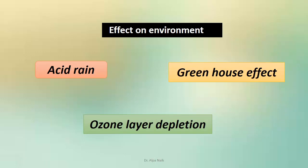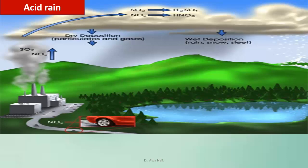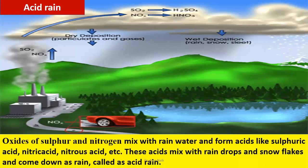There is a great effect on the environment through acid rain, greenhouse effect and ozone layer depletion. Acid rain is rainwater containing harmful amounts of nitric acid and sulfuric acid. When fossil fuels are burned, nitrogen oxides and sulfur dioxide are released. These oxides mix with rain water or water vapor and form acids like sulfuric acid, nitric acid and nitrous acid. These acids mix with raindrops, snowflakes or mist and come down as acid rain.